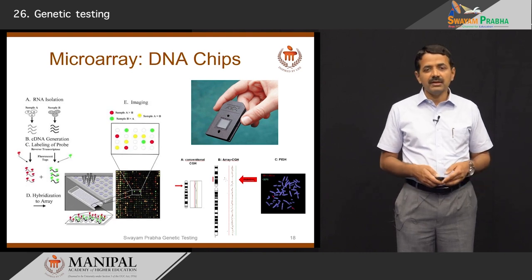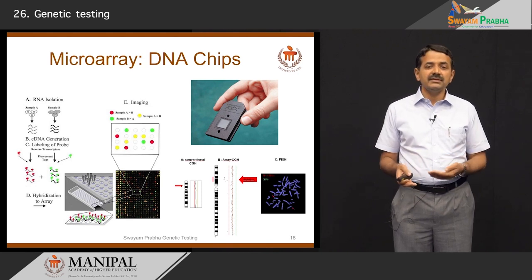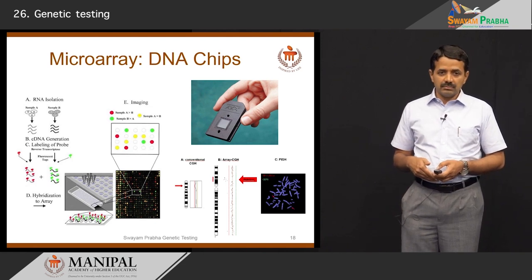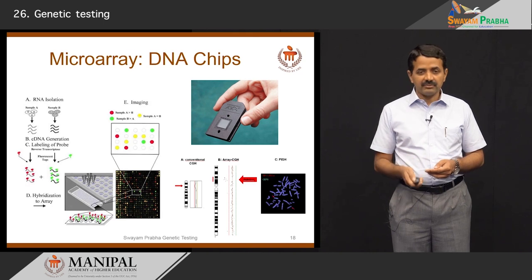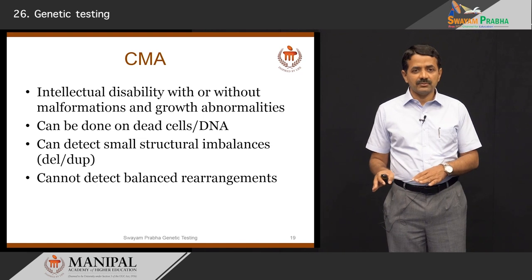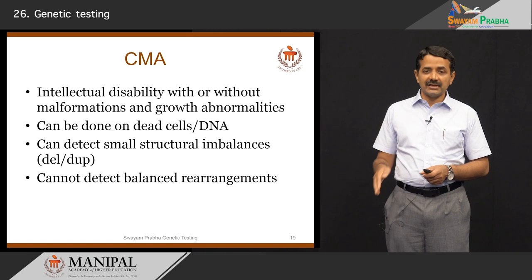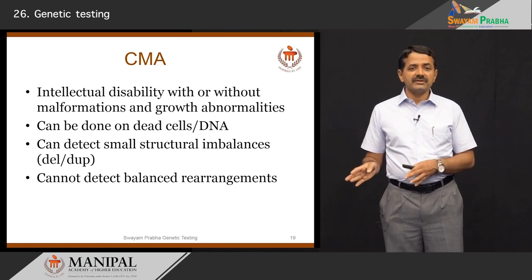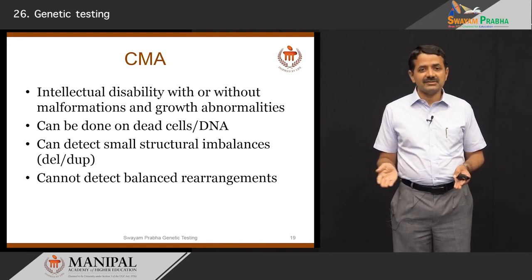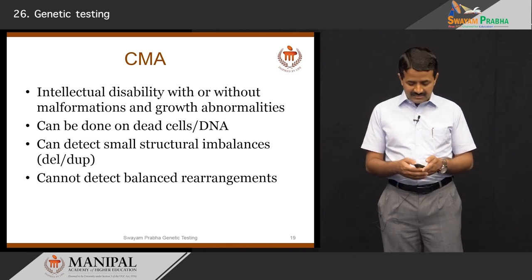Chromosomal microarray can count chromosome number, but it cannot detect balanced rearrangements because we are only analyzing dosage, not structure. Structural balanced rearrangements cannot be detected. Chromosomal microarray is the most widely used test for evaluating children with intellectual disability with or without malformations and growth abnormalities — it can detect small structural imbalances but not balanced rearrangements.